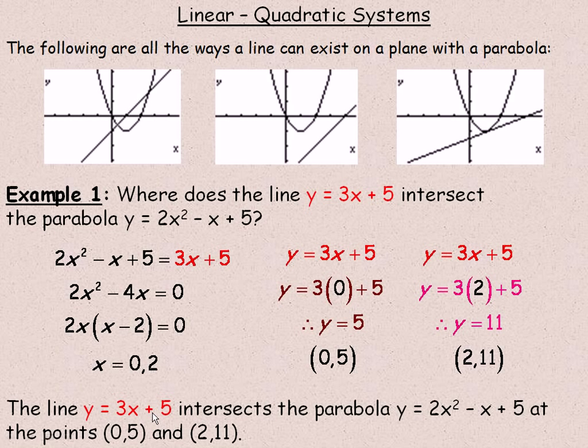To answer the question: where does the line intersect the curve? The line y = 3x + 5 intersects the parabola y = 2x² - x + 5 at the points (0, 5) and (2, 11). You don't really need to reiterate the actual equations of the line and the curve—you could just say the line intersects the curve at the points (0, 5) and (2, 11) if you want.